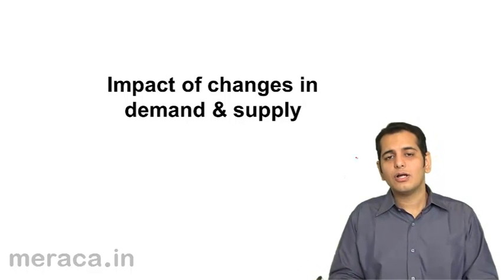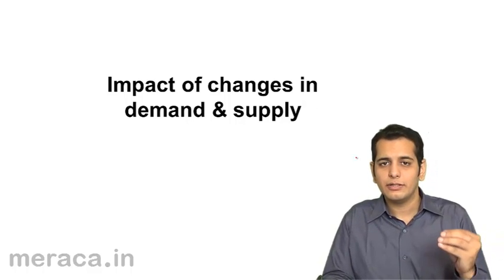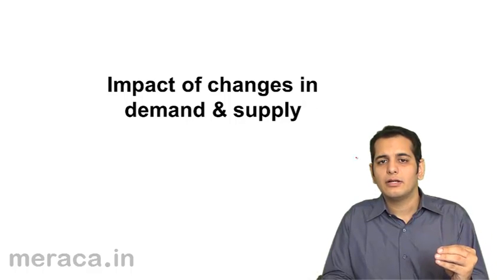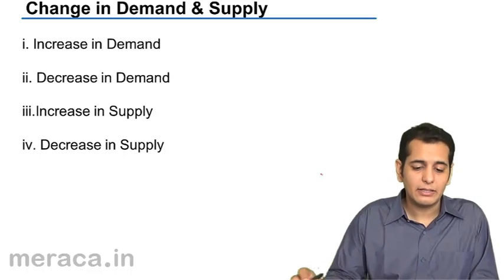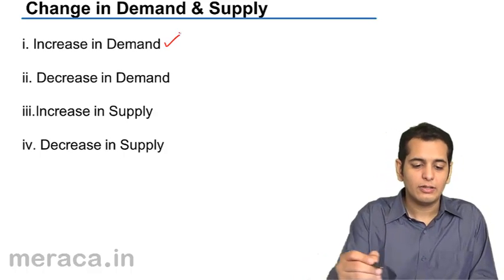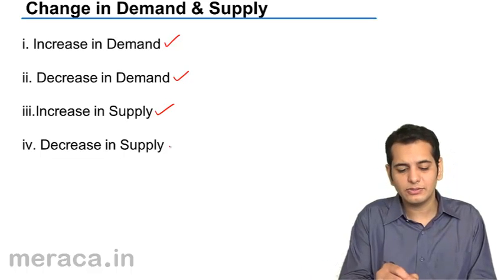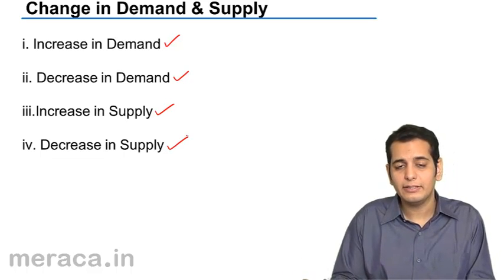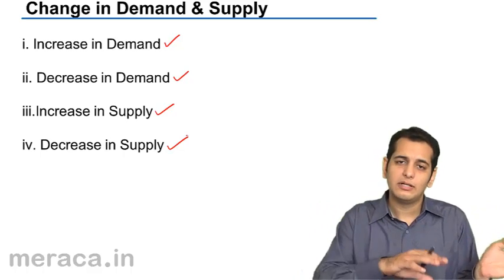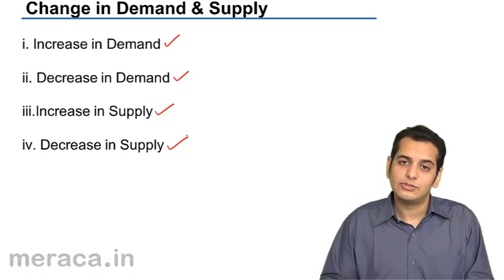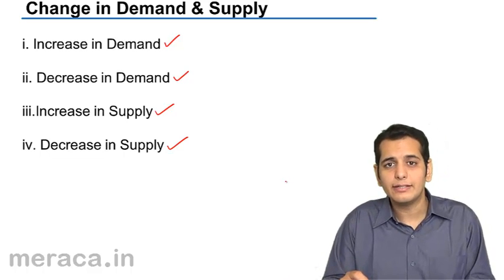Since we've understood how we reach the equilibrium, let us understand what are the changes in demand and supply and how they impact the equilibrium. To understand this, we'll take separate cases: cases where only demand increases, cases where only demand decreases, case where only supply increases, and finally a case where only supply decreases. After considering these four cases, we will take a case where both demand and supply are changing. But let us first take these cases individually. The first case is increase in demand.